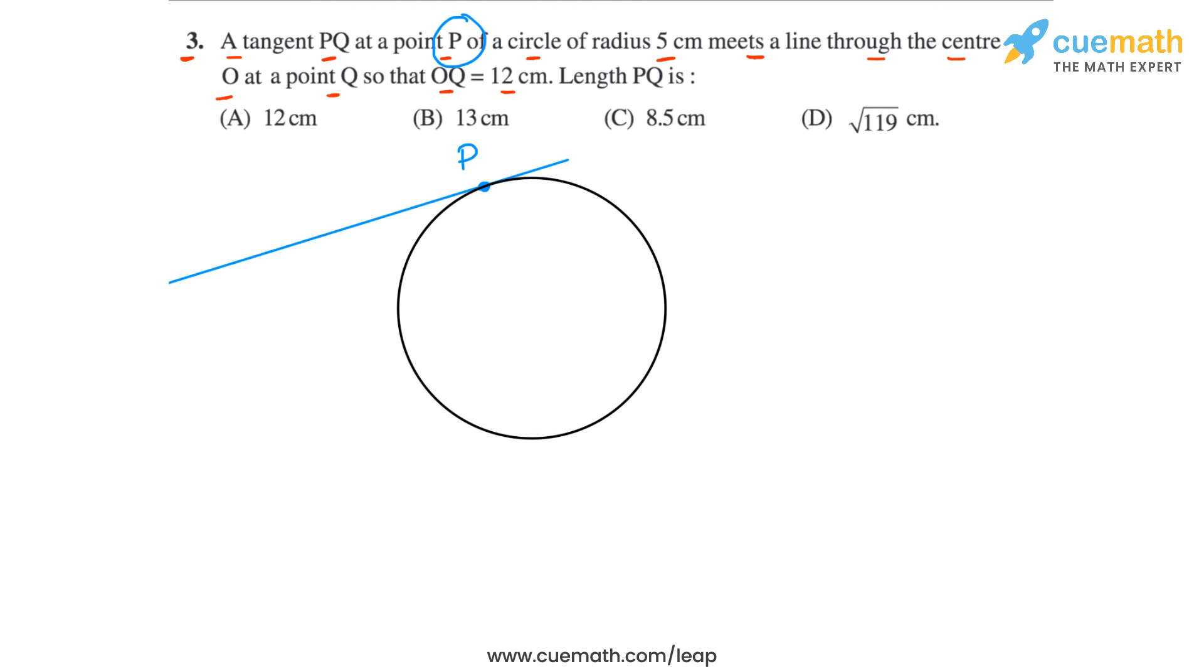We are told that this tangent meets a line through the center O. Let's say that the center O is this point here. The tangent meets a line through the center O at a point Q such that OQ is 12 centimeters. So let's draw a line through O, like this. And the point of intersection of these two lines will be the point Q.